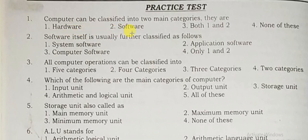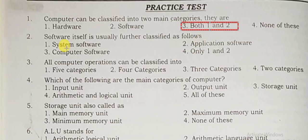Computer can be classified into 2 main categories. They are Hardware and Software — the answer is both 1 and 2. Software itself is usually further classified as follows: it is system software and application or computer software.